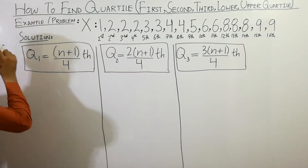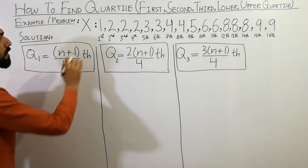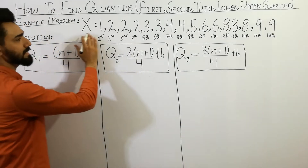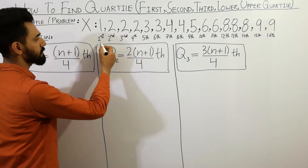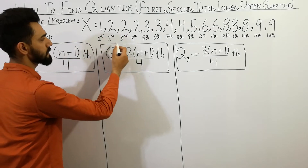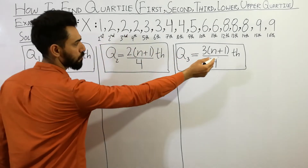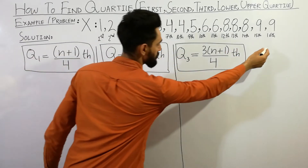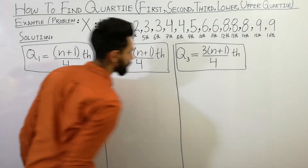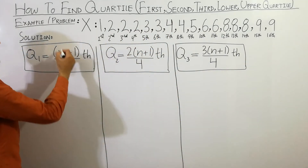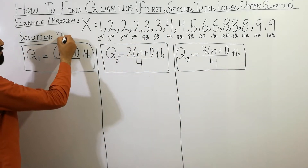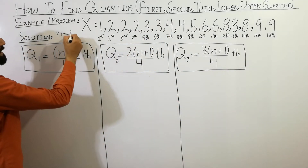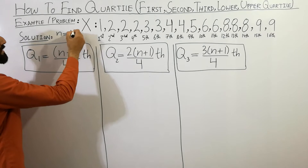First of all, the x data is given here and the terms are given here. I'll solve 16 terms, so here n, which is the number of values, is equal to 16.